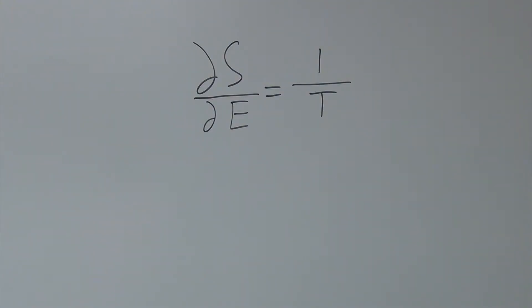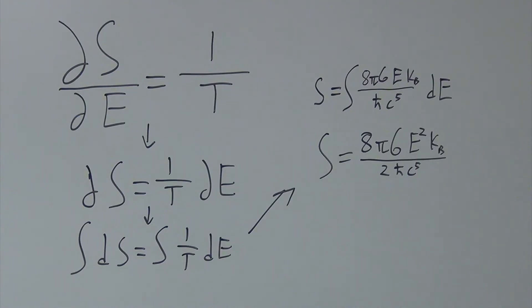Finally, to calculate the entropy of a black hole, we use the following identity. Using separation of variables and the definition of temperature we already have, we find the following.